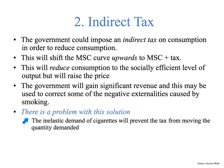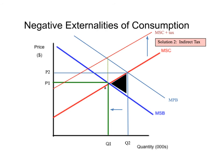There is a problem here, and this is interesting for your evaluation: the inelastic demand of cigarettes will actually prevent the tax from moving the quantity demanded all the way back to the Q1 level. Let's take a look at how that would look on the graph.